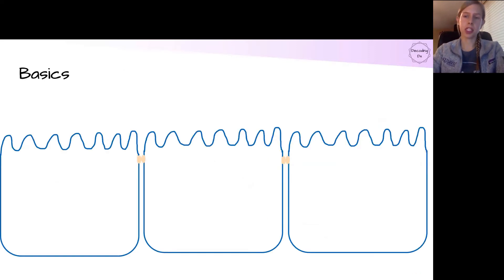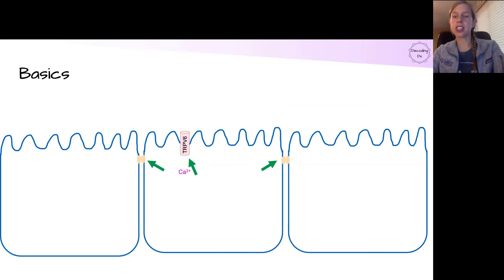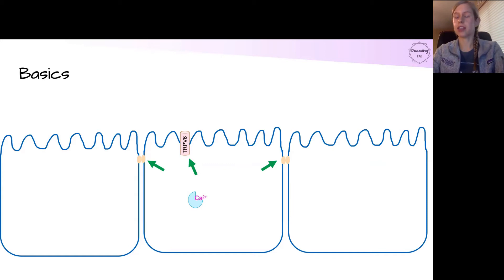Some basics of calcium absorption in the GI tract: these are our intestinal epithelium cells, connected by tight junctions. Most calcium absorption occurs via facilitated diffusion through the TRPV6 channel, with some active endocytosis and paracellular transport as well. Once inside, calcium binds to calbindin, which maintains the concentration gradient, and is then transported to the basolateral membrane, where it is exchanged with sodium and actively transported into the body.